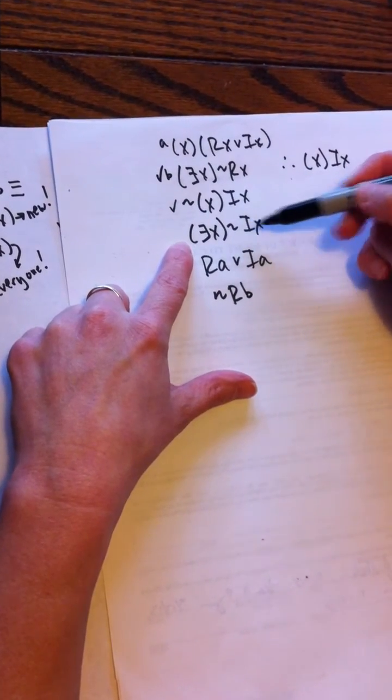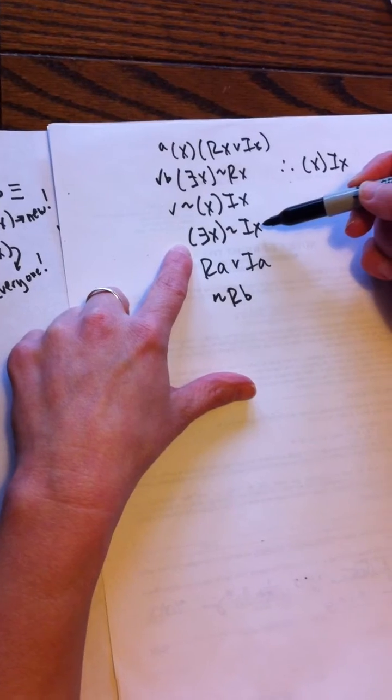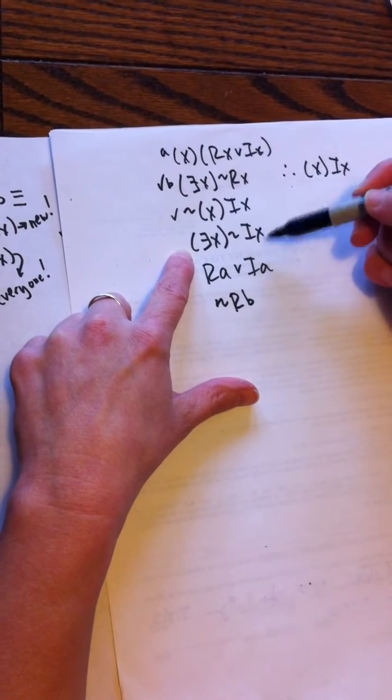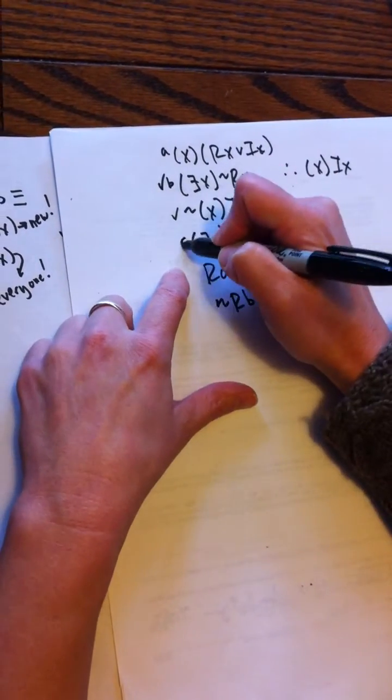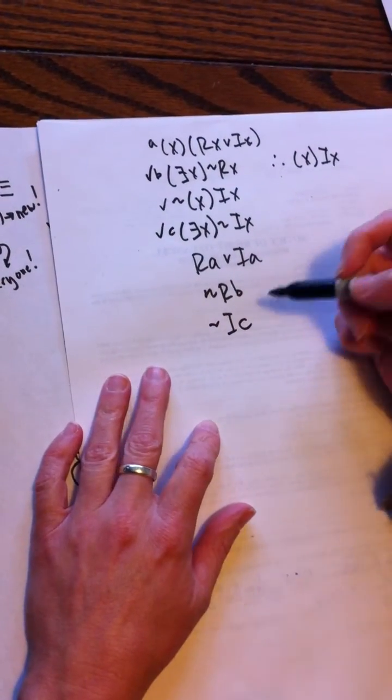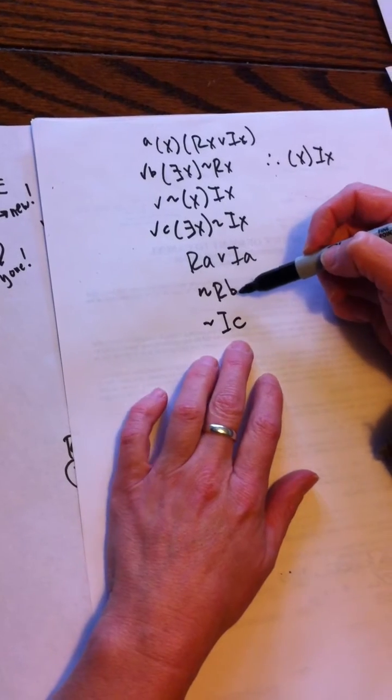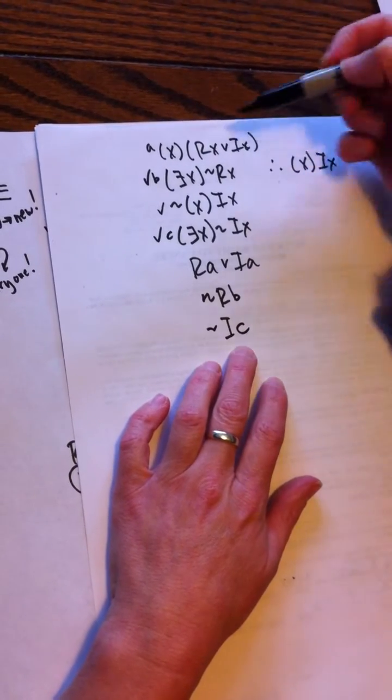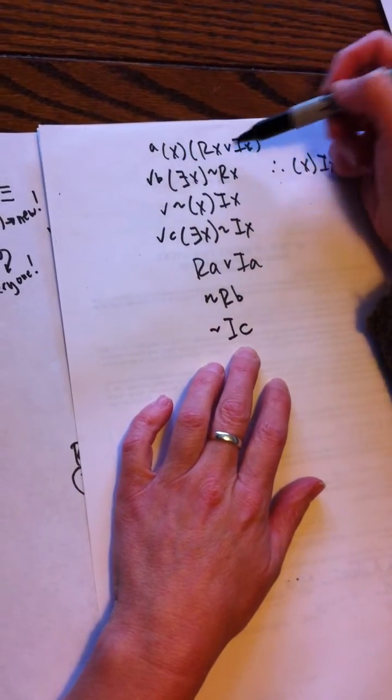Now I'm gonna do this existential. I can't use a or b, so I'll use c: tilde Ic. All right, so now I've introduced a b and a c into my proof. Looking back up here, I have this universal.